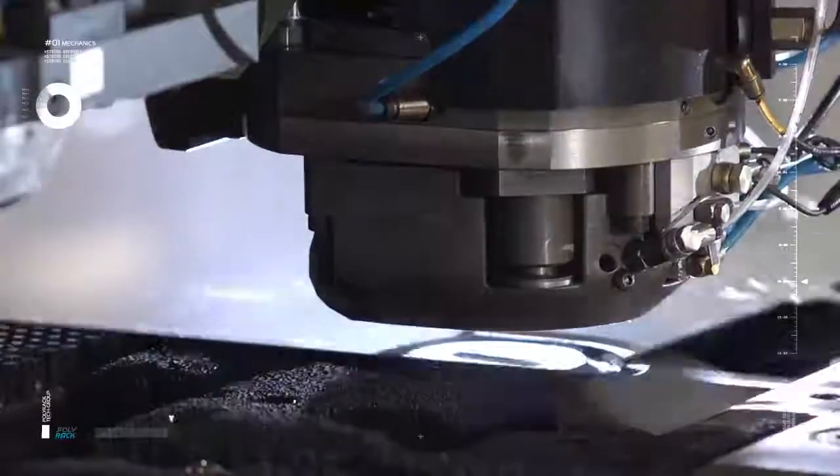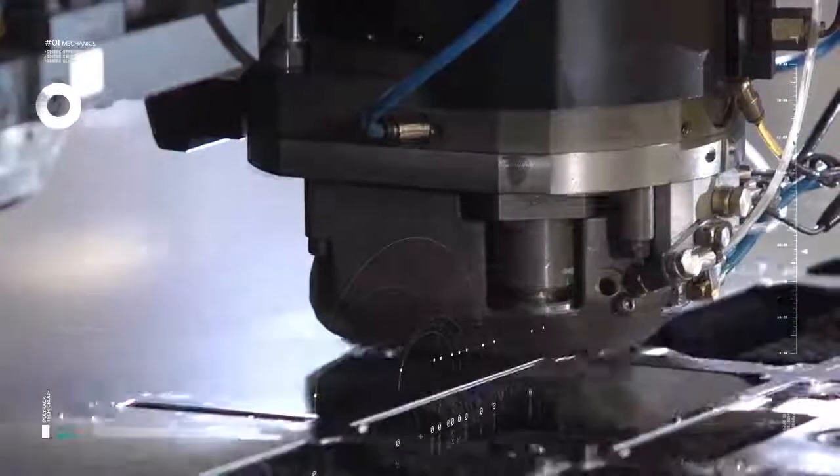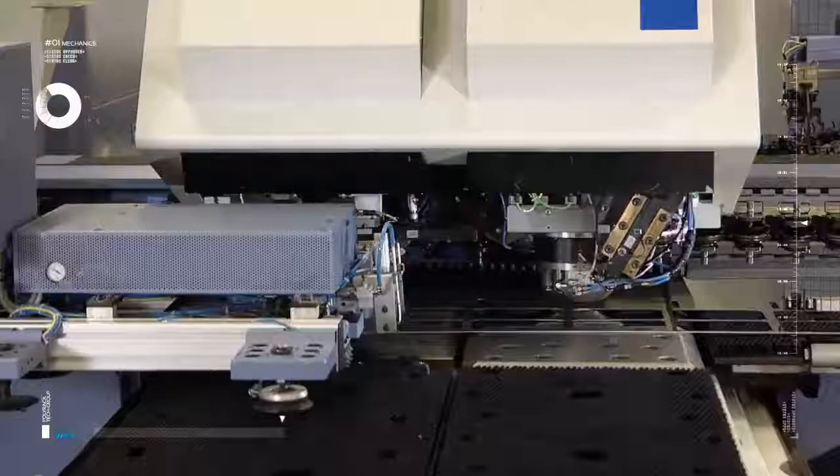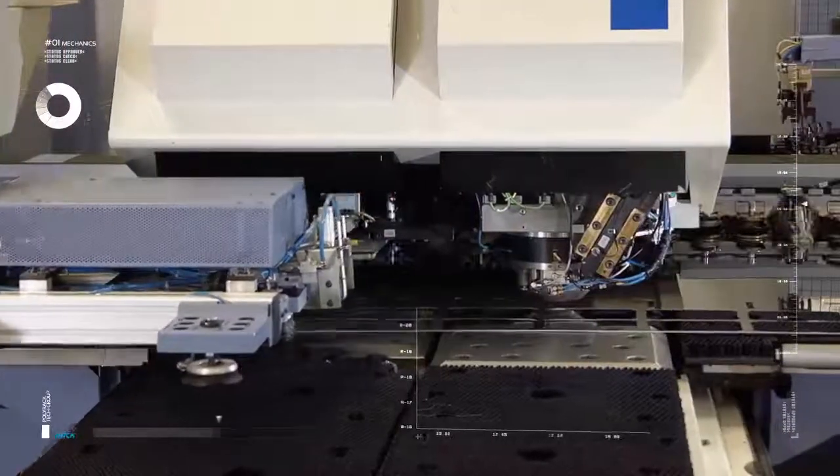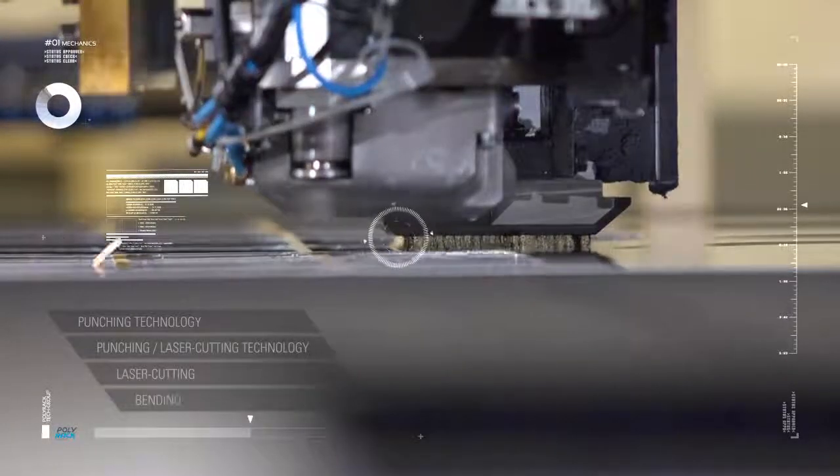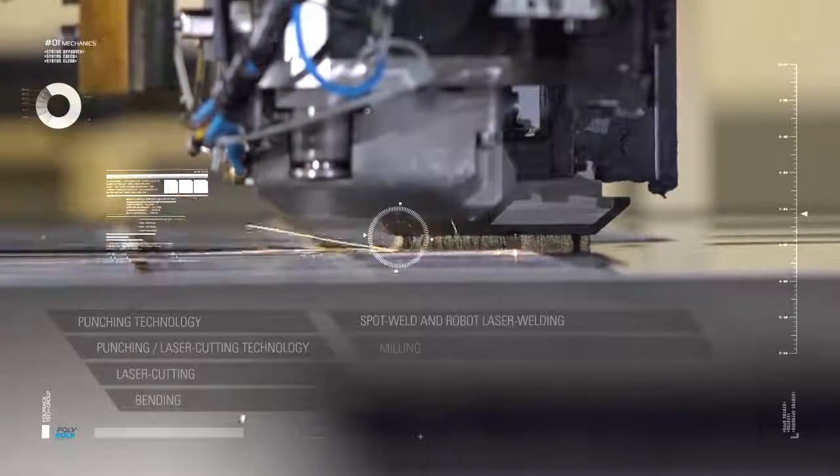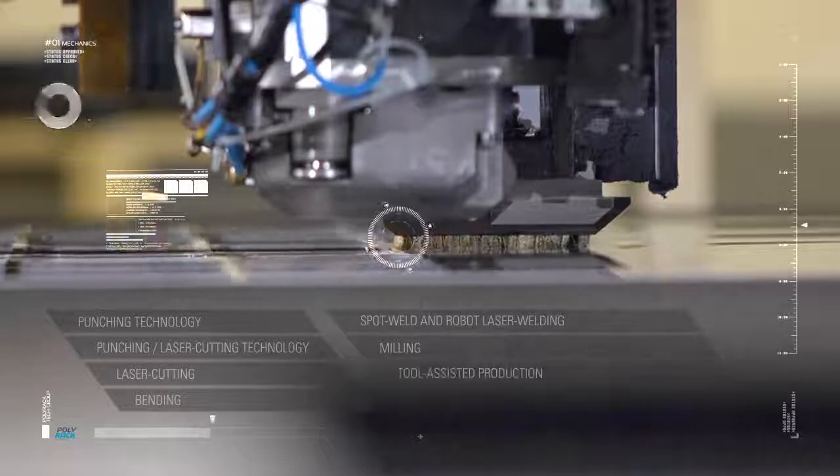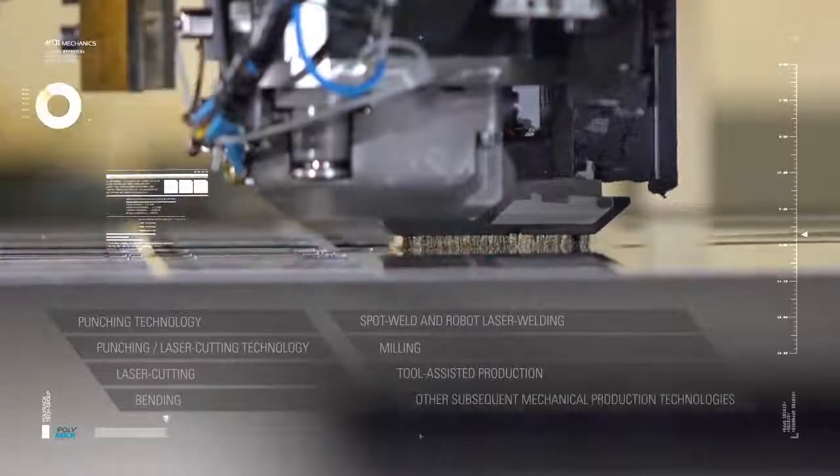Various processes in mechanical production are used in addition to the standard basic processes, such as stamping technology, mix of laser and stamping technology, laser cutting, bending, point and robotic laser welding, milling, and tool-dependent production.